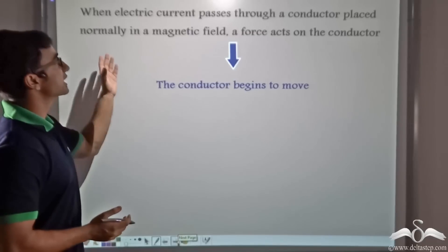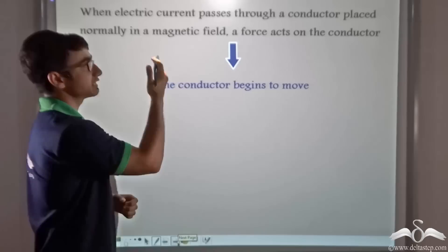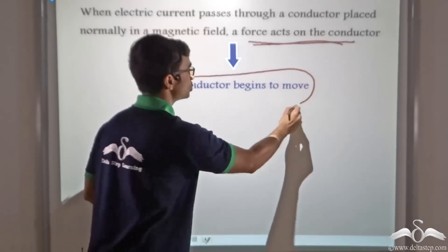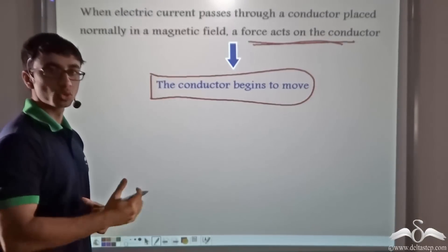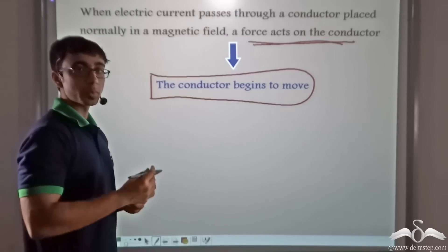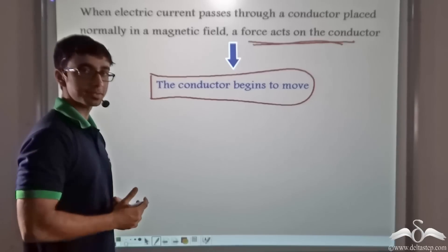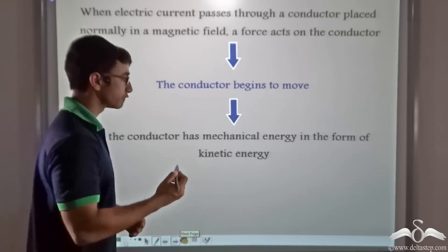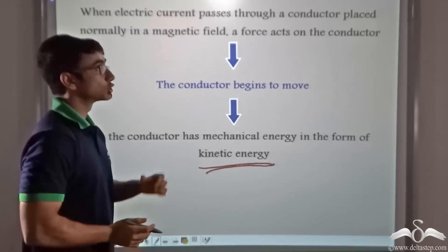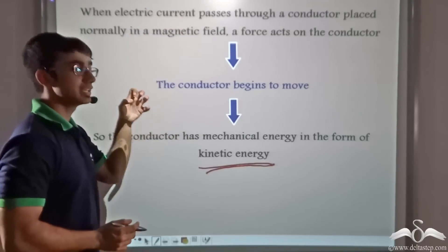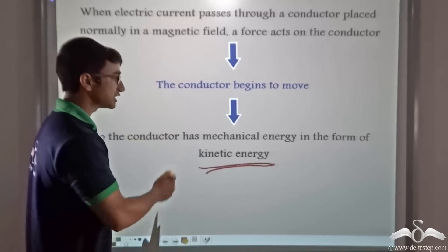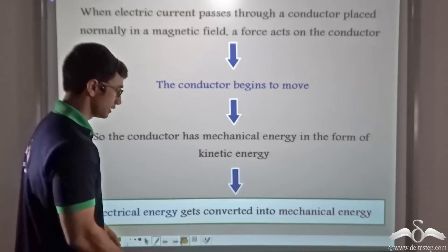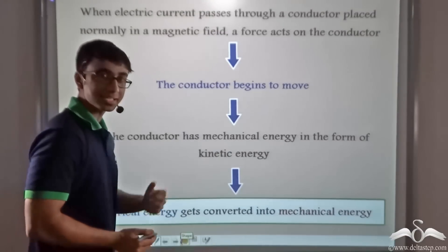When electric current passes through a conductor placed normally in a magnetic field, a force acts on the conductor and the conductor begins to move. The moment the conductor is moving it has some sort of mechanical energy. When mechanical energy is possessed by a moving body it is termed as kinetic energy. So when we feed electrical energy into the DC motor, it is being converted into kinetic energy, which is a kind of mechanical energy. Thus electrical energy is getting converted into mechanical energy.